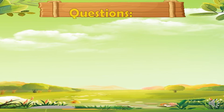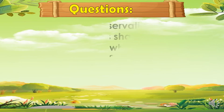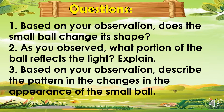After doing the activity, answer the following questions. First, based on your observation, does the small ball change its shape? Second, as you observed, what portion of the ball reflects the light — and explain. Third, based on your observation, describe the pattern in the changes in the appearance of the small ball.